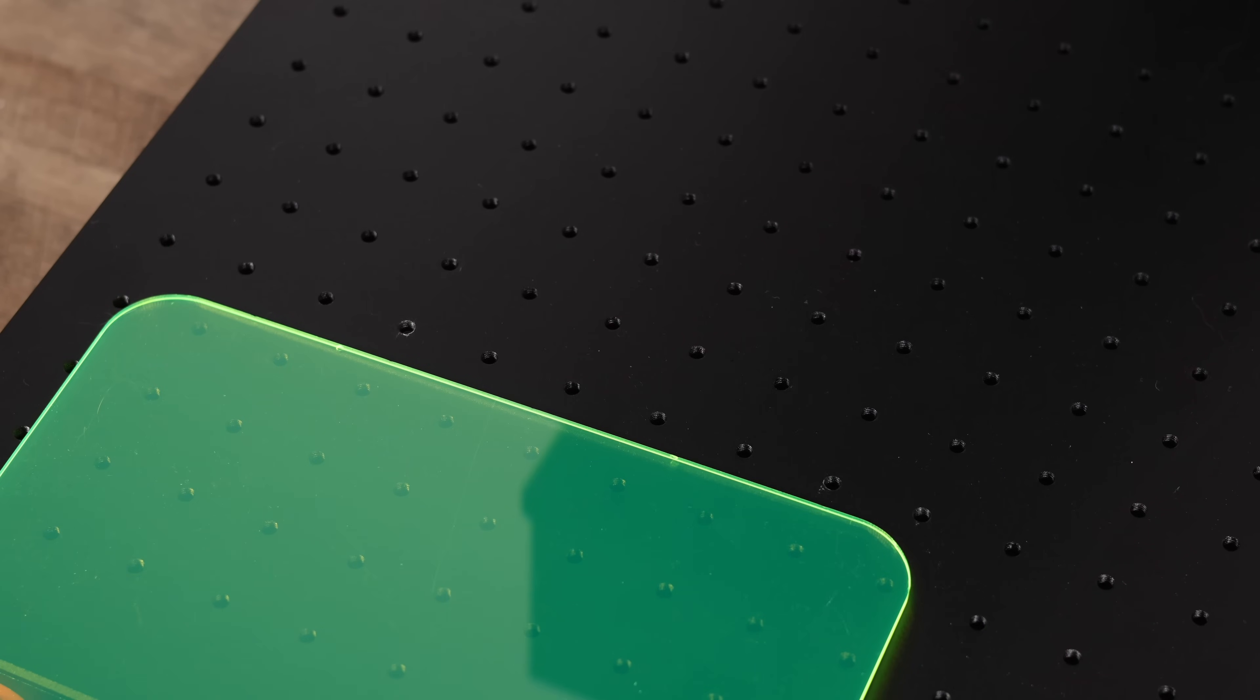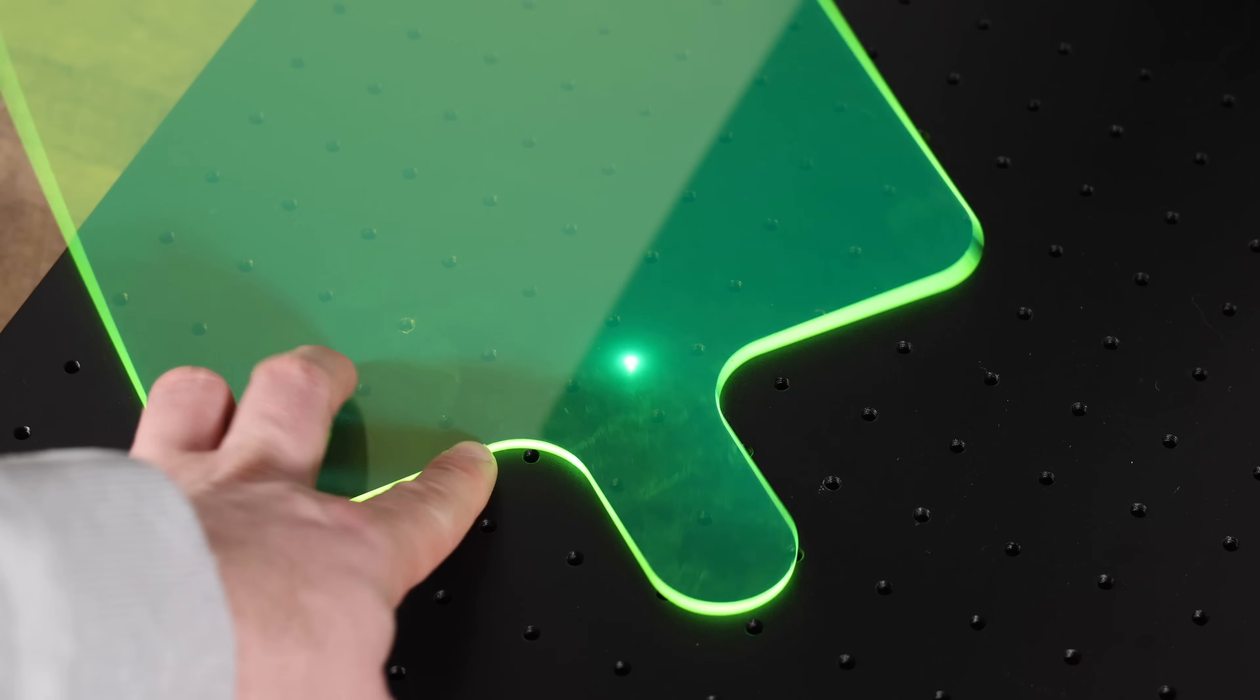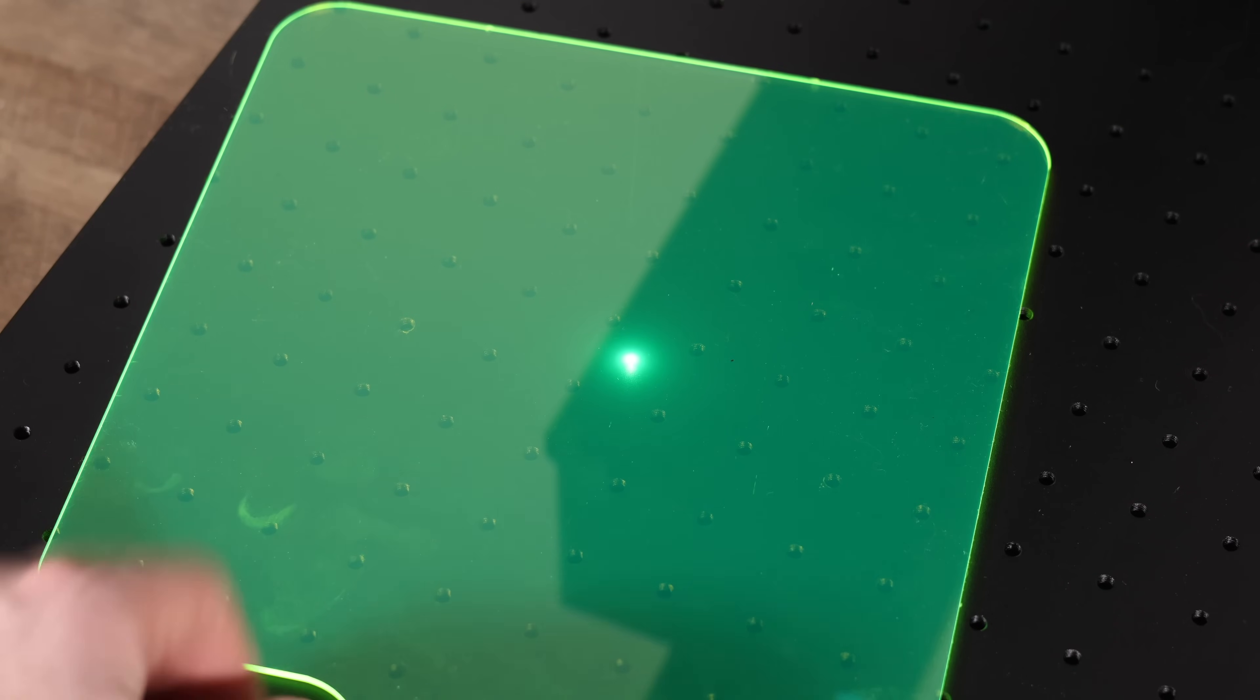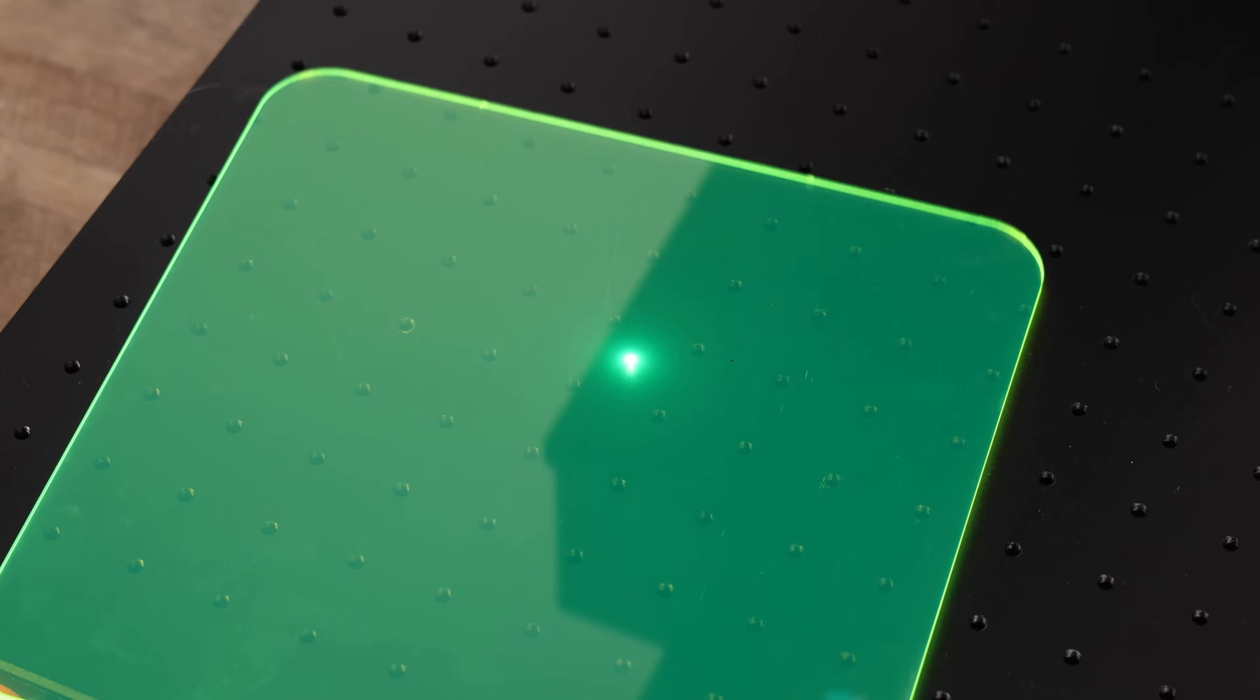This is why ComMarker includes this helpful green acrylic piece. When placed on the base, it lights up, making the dot much easier to see, especially when framing your project.